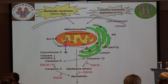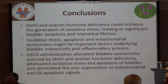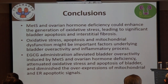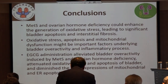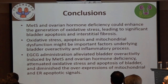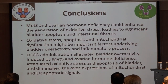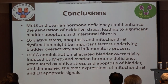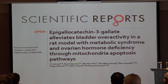Our conclusion is that metabolic syndrome and ovarian hormone deficiency enhance oxidative stress, leading to significant bladder apoptosis and detrusor fibrosis. Oxidative stress, apoptosis, and mitochondrial dysfunction may be important underlying factors in bladder overactivity. EGCG treatment can alleviate overactive bladder through attenuation of oxidative stress, apoptosis, and diminishing overexpression of mitochondria apoptosis signals. This paper was published in Scientific Reports in March 2018.